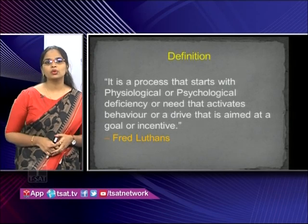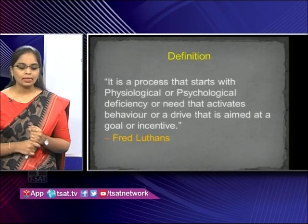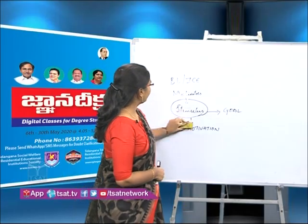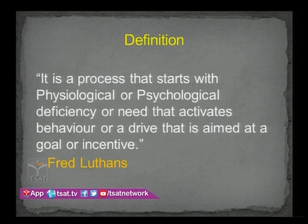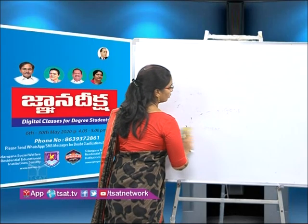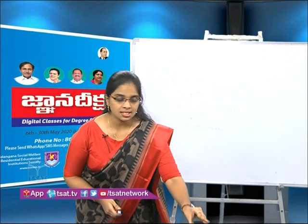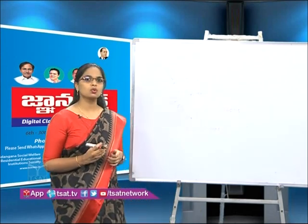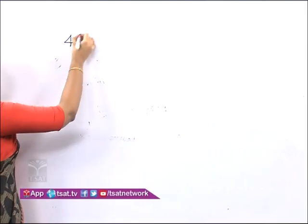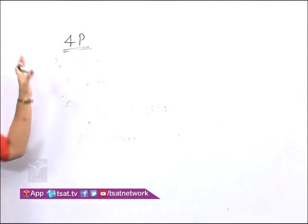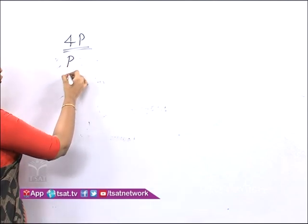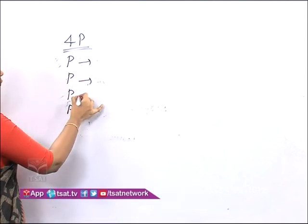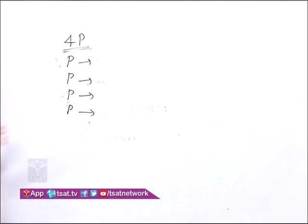There are many factors that motivate a person. Organizations use different factors to motivate employees. The most widely used technique is the 4P formula. Under this 4P formula there are four Ps, and each P denotes one word. The first P indicates praise — appreciation given based on the performance of employees. This praise or appreciation motivates employees a lot.